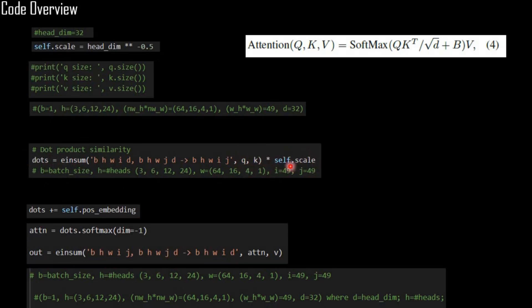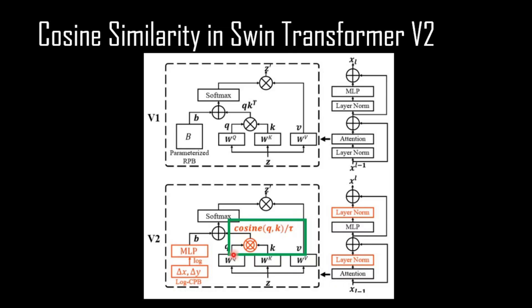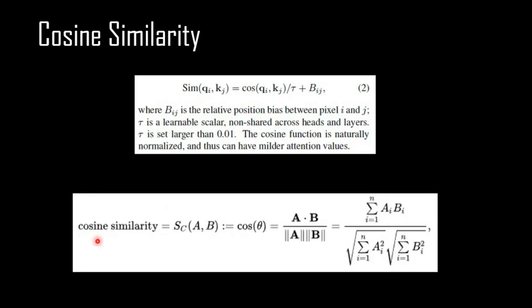In version 2 of Swin Transformer, instead of using dot product similarity they use cosine similarity, which is basically the dot product between two vectors divided by the multiplication of the length of each vector. This cosine similarity is then divided by tau, which is defined as a learnable scalar set larger than 0.01.